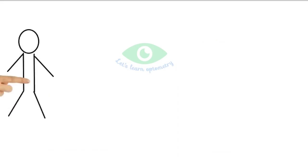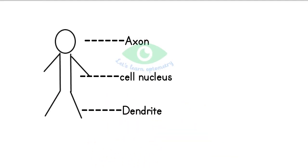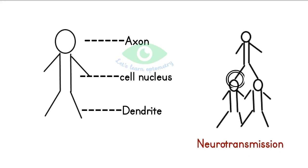Before learning the layers of the retina, we will see the basic structure of a nerve cell. Imagine the nerve cell as a human body: the head is the axon, the central trunk is the nucleus, and the legs are the dendrites. Each leg connects with the head of another neuron, where nerve impulses are passed from one neuron to another by means of chemical reactions — this is called neurotransmission. The place where an axon and a dendrite meet is called a synapse.